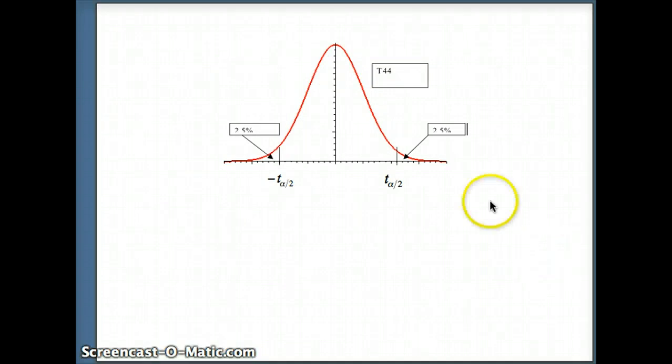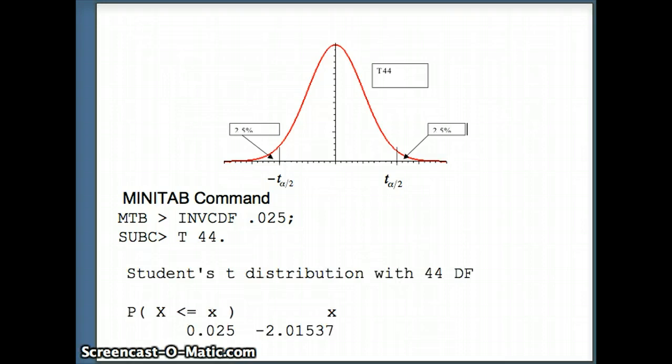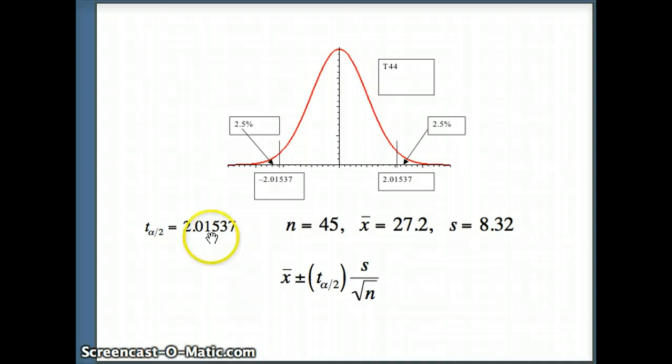So here's our picture. We have a t with 44 degrees of freedom, 2.5% in this tail, 2.5% in that tail. So we're going to ask Minitab to go ahead and tell us what t alpha by 2 is going to be. So you'll notice t alpha by 2 is on the positive side. Negative t alpha by 2 is on the left side. So we're going to use an INVCDF command. For 2.5%, we're going to say INVCDF .025. So 2.5%, a t with 44 degrees of freedom. And what's that going to give us? That's going to give us, for .025 in the tail, we're going to get negative 2.01537. So this number is negative 2.01537. This number is positive 2.01537. So that's what t alpha by 2 is. So plugging those numbers in with 2.5%, 2.01537, negative 2.01537.